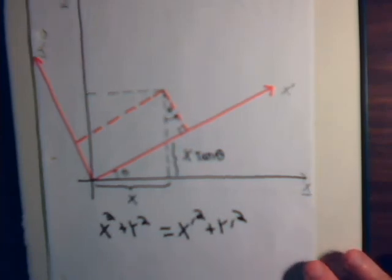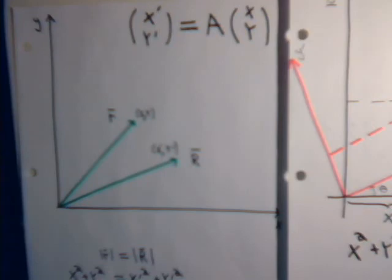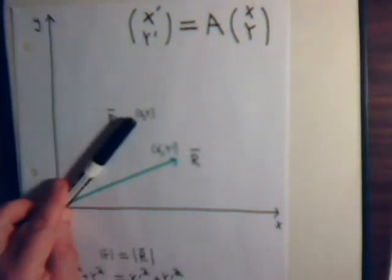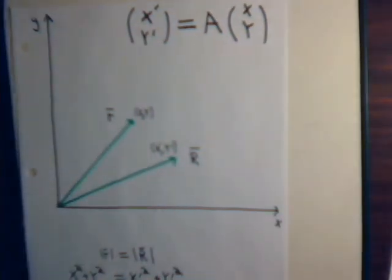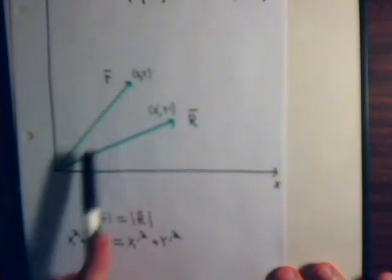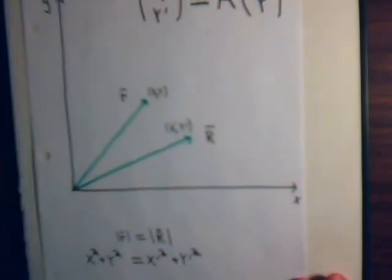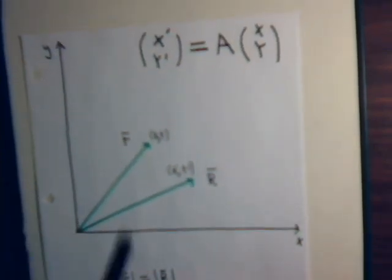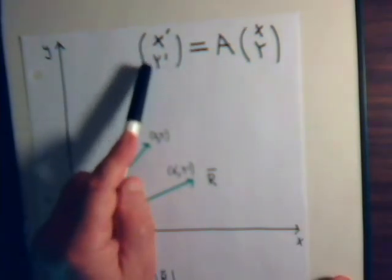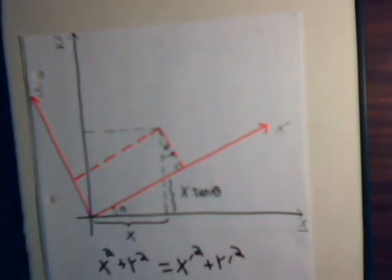The point is that matrices which transform one vector into another but preserve the magnitude of the vector are called orthogonal matrices, because instead of thinking of them as transforming one vector into another of equal magnitude, if we think of them as generating an x prime, y prime new axis system, then x prime and y prime must be orthogonal to each other. That's an introduction to orthogonal matrices. We'll discuss their properties in more detail in future videos.